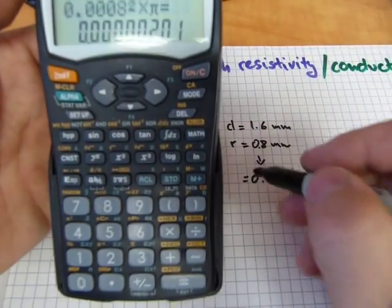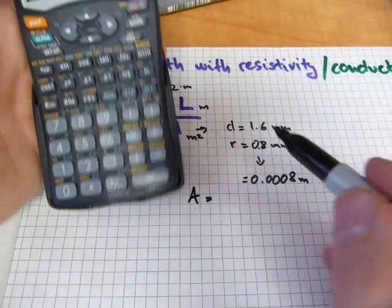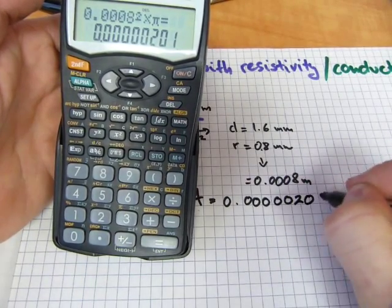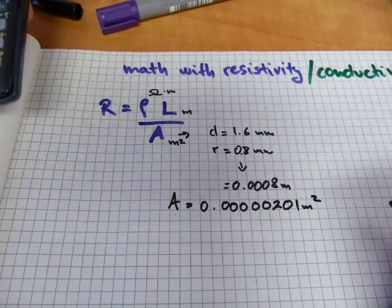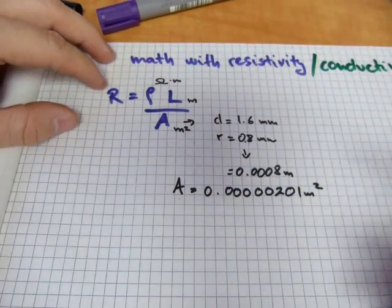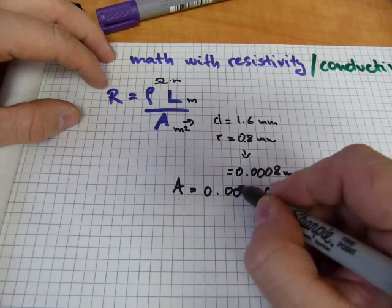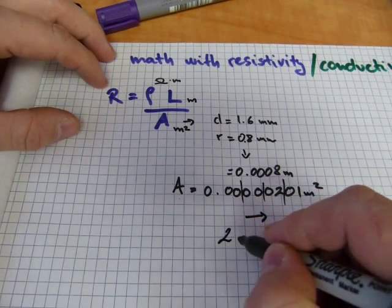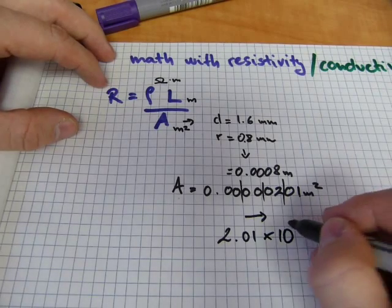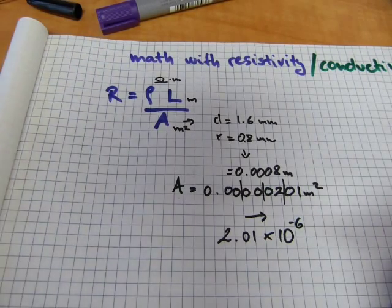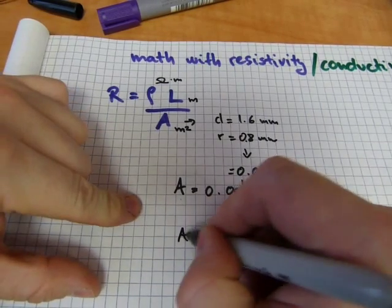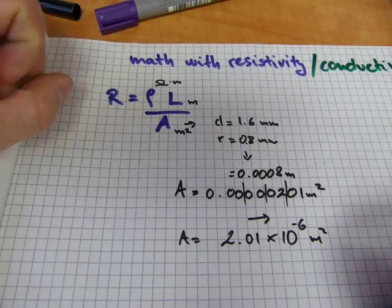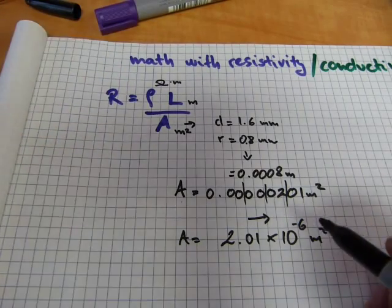So this 0.8 millimeters is in meters 0.0008 meters. If I square it and pi it, 0.0008 squared times pi equals that number for the cross-sectional area of this wire. So I've got area equals 2.01 times 10 to the power of minus 6 meters squared. I want to make it into scientific format, moving the decimal six jumps. So it's rewritten as 2.01 times 10 to the power of minus 6. That's the area in meters squared.